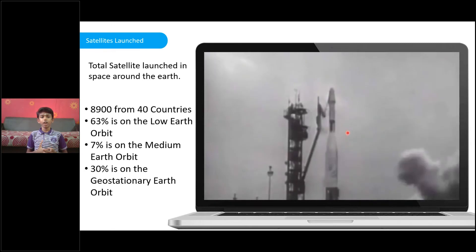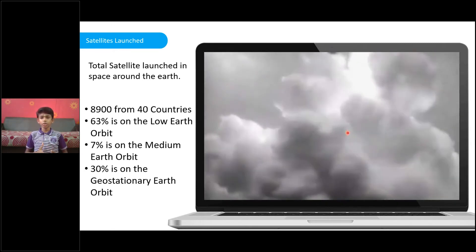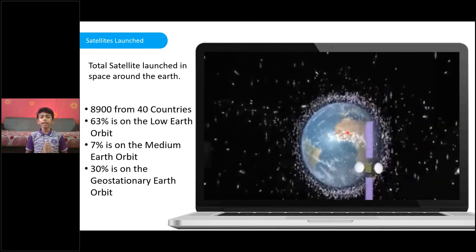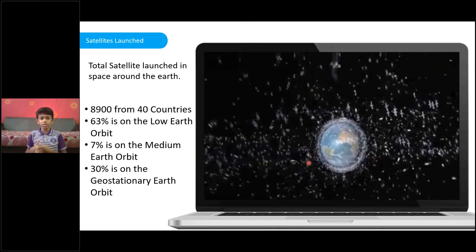Since 1957, 8,900 satellites have been launched from 40 countries. 1,900 satellites were operational and the rest are not in use.